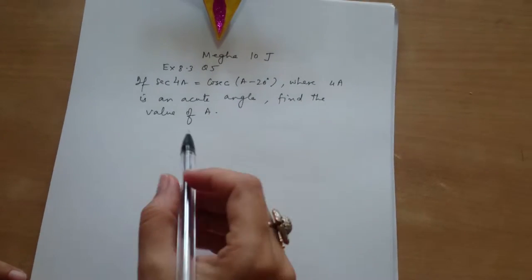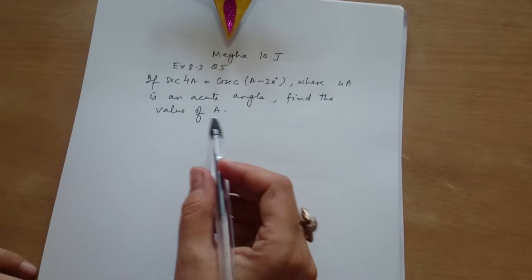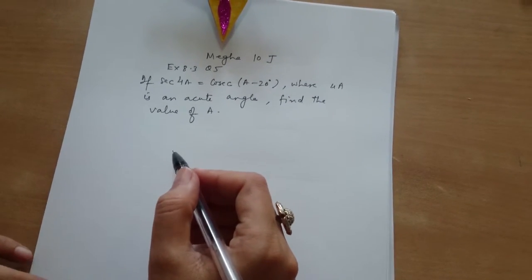Question for you is, if secant 4a is cosecant a minus 20 degrees, where 4a is an acute angle, find the value of a. How you will do this?